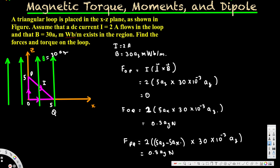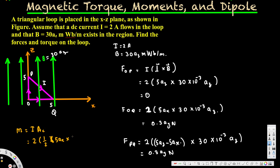Now we calculate the magnetic dipole moment using m = i × area. i = 2. Since this is a triangle, the area = ½ × base × height = ½ × 5ax × 5az. ax cross az gives negative ay. Calculating: m = 2 × ½ × 25 × (−ay) = −25ay Newton·meter per Tesla. That is the magnetic dipole moment.